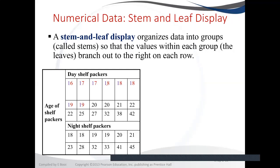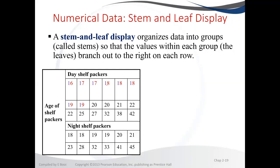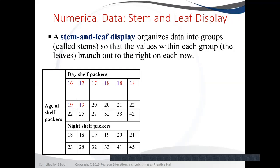We're going to have only one stem, so for all the values where the stem is 1, all the leaves will follow each other, because the data is already in an ordered array. We will do the same with the night packers.